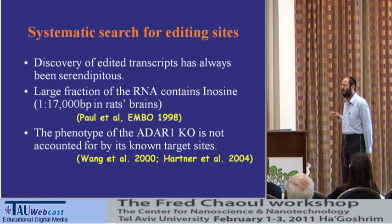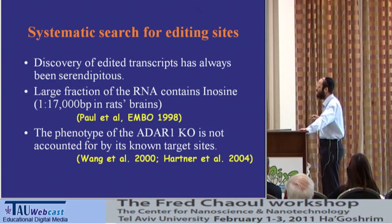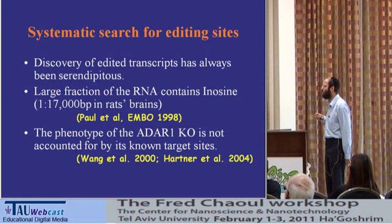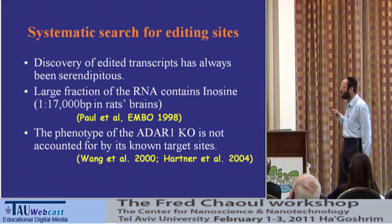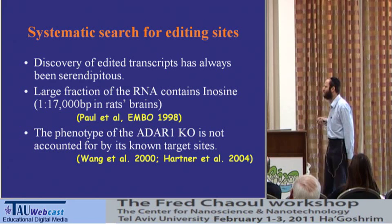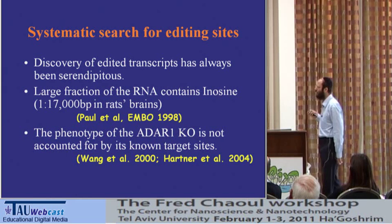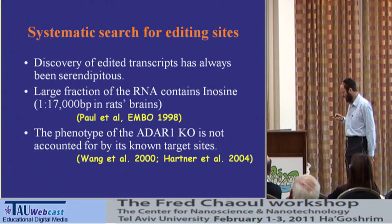However, there are hints suggesting that the scope of this phenomenon is actually much larger. Biochemical experiments isolated inosine from total RNA in the brain and found a very large amount — up to 1 per 17,000 base pairs in rat's brain. This number is far too big to be explained by three nucleotides in three genes. Also, the phenotype of ADAR1 knockout — the animal dying — is not accounted for by the three known targets. So people knew there were more editing sites yet to be discovered.